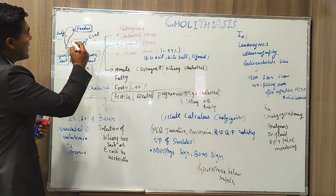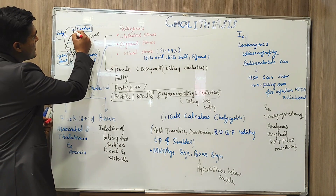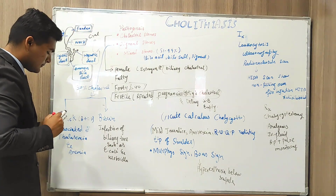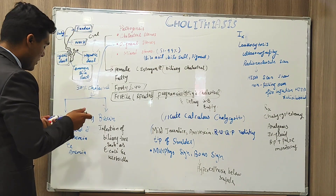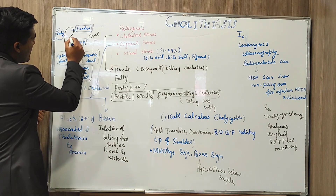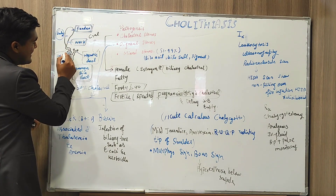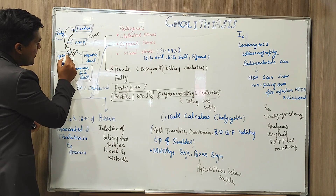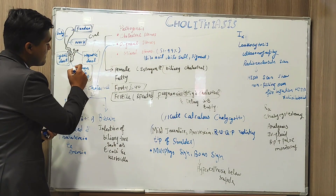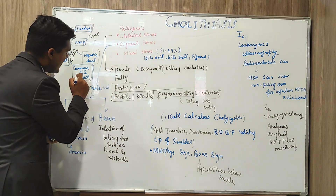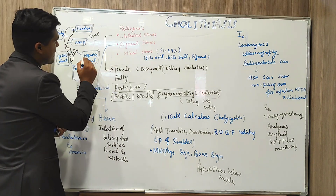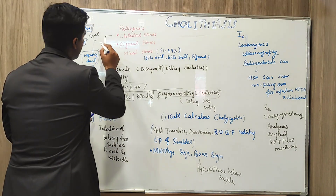The gallbladder has different parts: first is the fundus, then the body, the neck, the cystic duct — whose name depicts its fate — followed by the common bile duct and the hepatic duct.